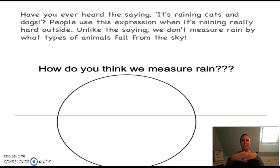Perhaps you've heard the expression 'it's raining cats and dogs' and maybe you ran to the window to see if there were dogs and cats falling down. Well, that wasn't the case, was it? That's an expression we use when it's raining really hard. But we don't use cats and dogs to actually measure rain, do we?